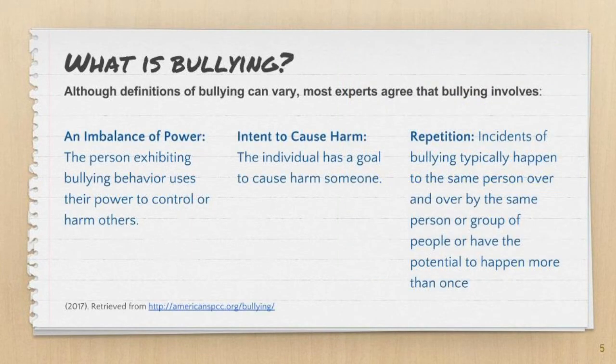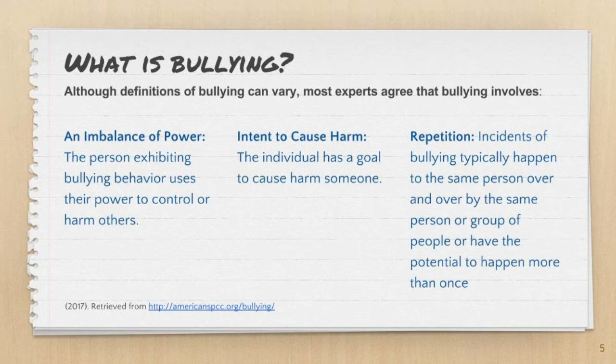There are many definitions of bullying but all have similar elements which determine if the negative actions of someone constitute bullying behavior or something else. Bullying happens when individuals try to create an imbalance of power — that is the goal of the interaction. It is repeated, doing it over and over and seeking out a specific individual. In order for a behavior to be considered bullying, it must be repetitive, where incidents happen to the same person by the same individual or group more than once.